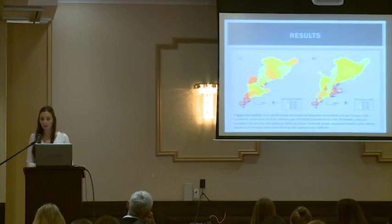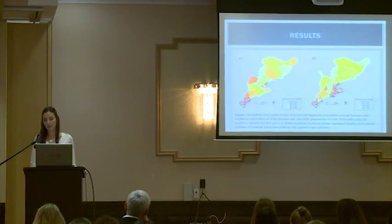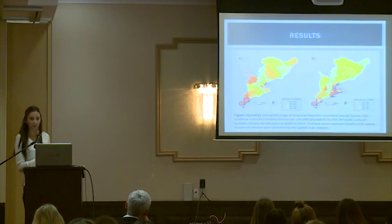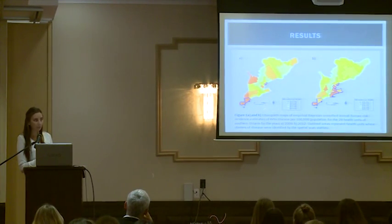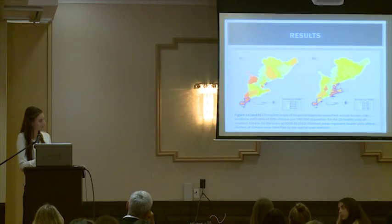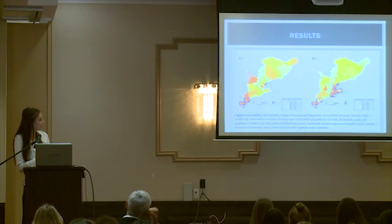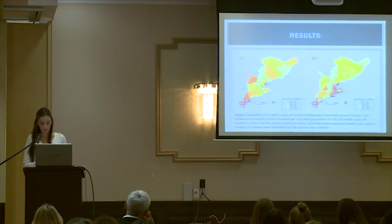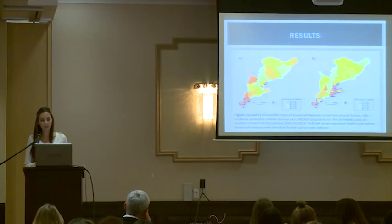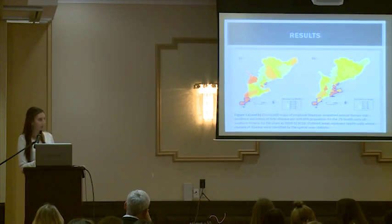Here are two maps. The one on the left shows the human risk incidence estimates for 2005, and the one on the right shows the incidence for 2012. In 2005, high-risk areas for West Nile virus were located in the southern tip of Ontario as well as in the Toronto public health unit. The areas outlined in blue are areas with significant clusters. In 2005, the primary cluster was in the Windsor and Chatham-Kent public health units, and there was a secondary cluster at the City of Toronto public health unit.